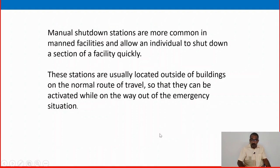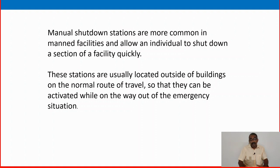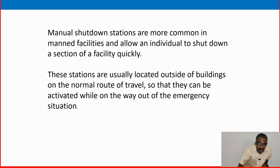Manual shutdown stations are more common in mandatory facilities and allow an individual to shut down a section of a facility quickly. Automatic shutdown systems are there, but ESD valves are also there. If instrument air pressure goes low-low, the entire plant will trip. Even though automatic shutdown systems exist, manual shutdown stations also provide an additional security feature for the oil and gas plant. Any operator, any control room person, or any responsible person can initiate a manual shutdown as well.